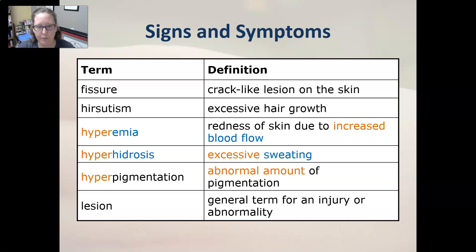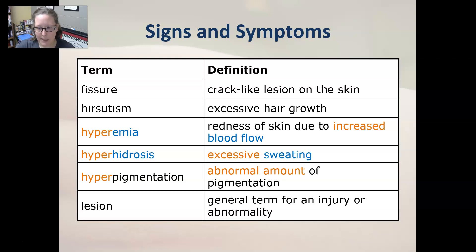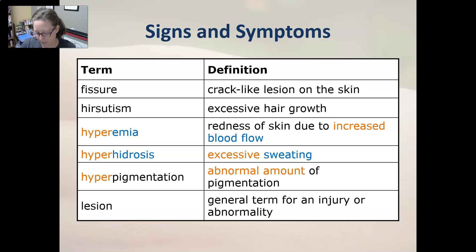Hyperhidrosis is excessive sweating. Hyperpigmentation is an abnormal amount of pigmentation in the skin. Lesion is a general term for an injury or an abnormality, like a wound.